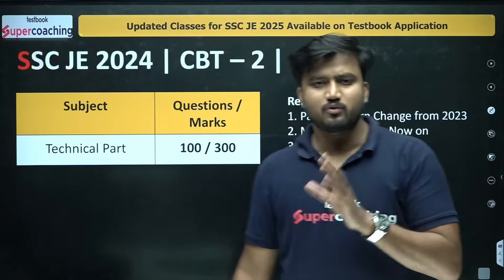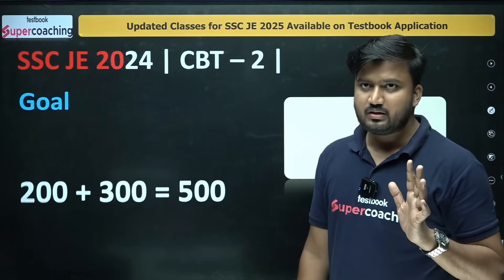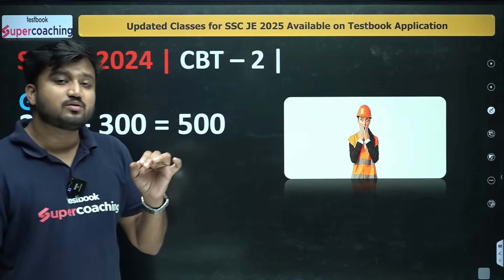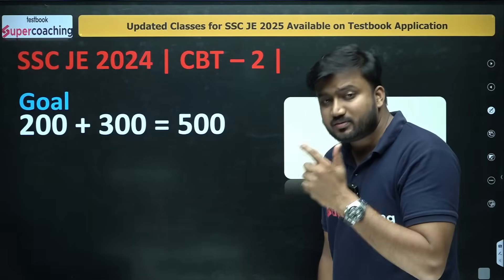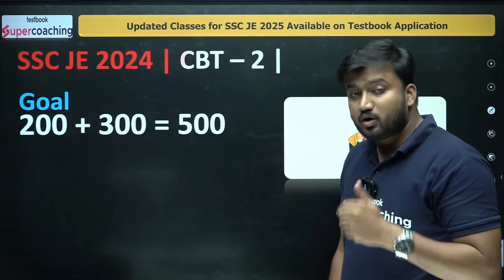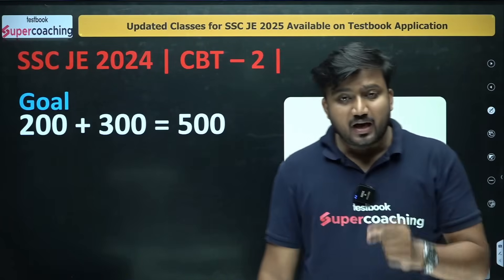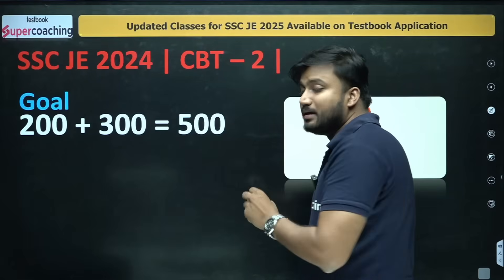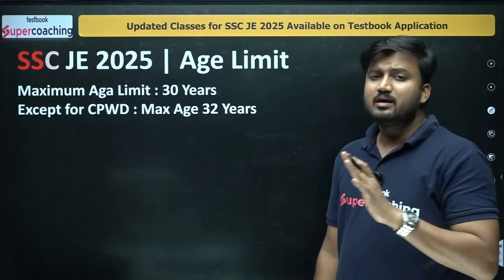After clearing CBT-2, the only remaining stage is document verification. Importantly, the final selection is based on the combined marks of both examinations — CBT-1 was of 200 marks and CBT-2 was of 300 marks — so the final merit on which you get your desired department will be based on marks obtained out of 500, not out of 200 or 300 individually.